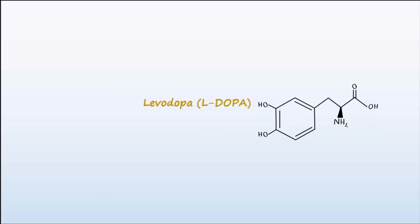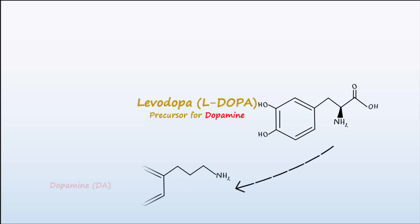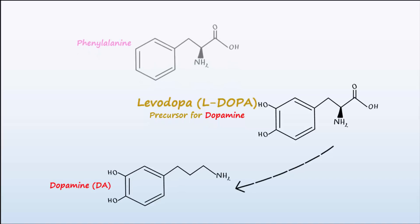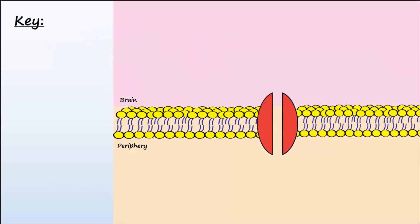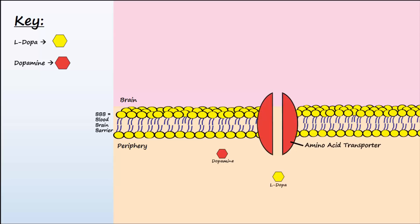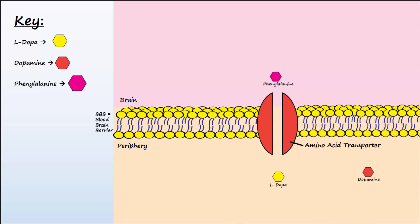L-DOPA, or levodopa, has been the cornerstone for Parkinson's disease medication therapy. L-DOPA is a precursor necessary for dopamine production by dopaminergic neurons in the brain. Phenylalanine is a precursor for the production of L-DOPA — note the similarity in structure of these three molecules. L-DOPA is able to cross the blood-brain barrier utilizing a special amino acid transporter that is also used by phenylalanine. Dopamine itself is unable to use this transporter and is therefore unable to cross the blood-brain barrier.